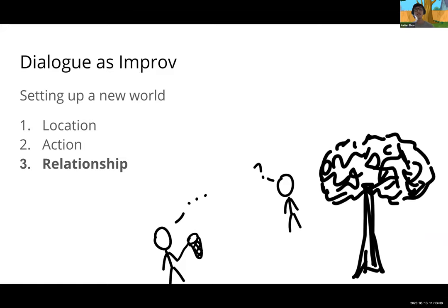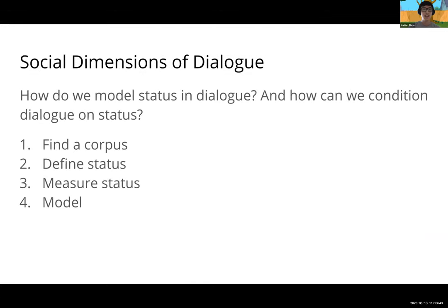We wanted to focus on the social dimension. To do so, we first need to find a corpus, second define what status is, third measure status, and fourth actually model status. The idea of status is that people can have high or low status relative to others, and this impacts the way they interact and what they say.